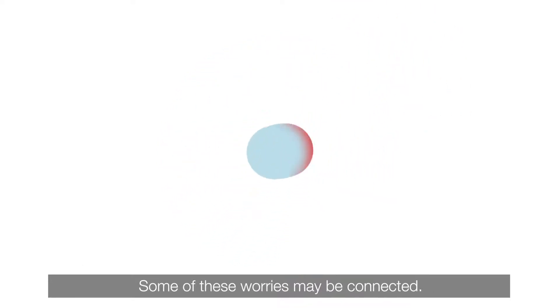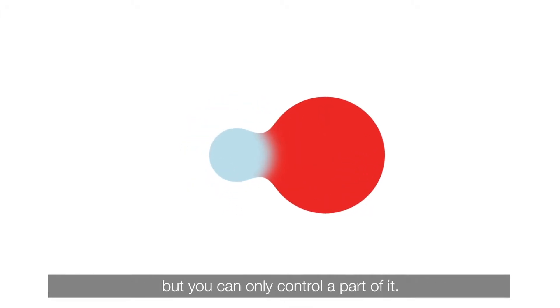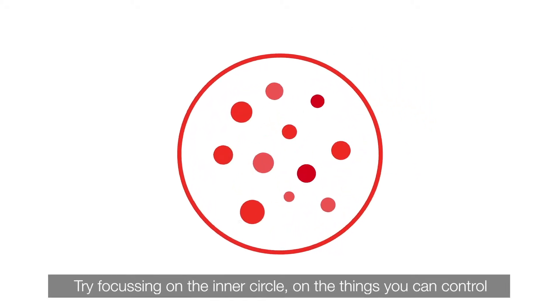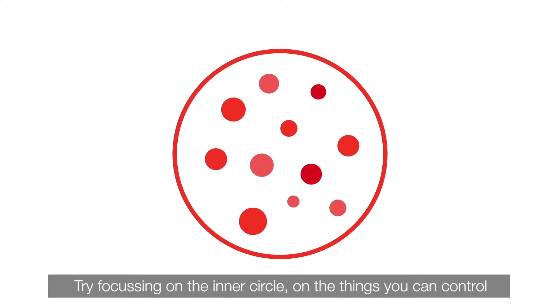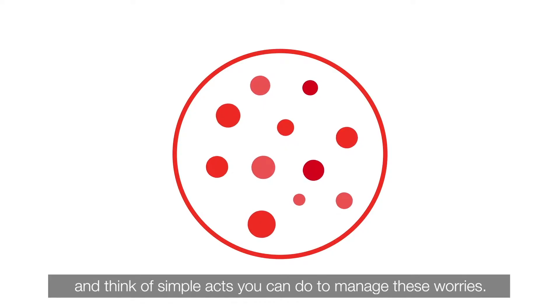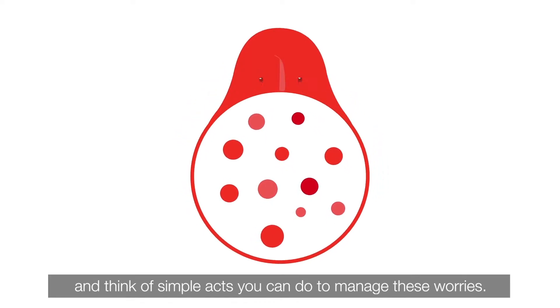Some of these worries may be connected. For example, if you're worried about a big challenge but you can only control a part of it, try focusing on the inner circle, on the things you can control, and think of simple acts you can do to manage these worries.